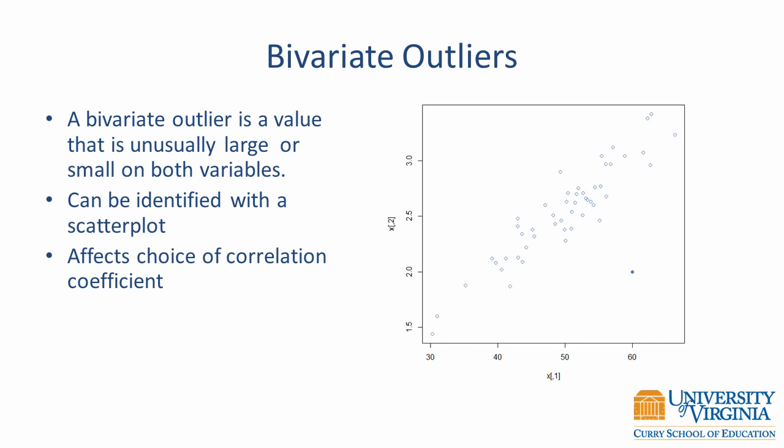When evaluating the relationship between two variables, you can have an outlier on one or both variables. This type of bivariate outlier is easy to identify in a scatter plot — a solid-filled circle with unusual values on both variables. A bivariate outlier can have an adverse impact on the Pearson correlation coefficient. If you notice a bivariate outlier, you may want to use a Spearman rank order correlation instead of a Pearson correlation.